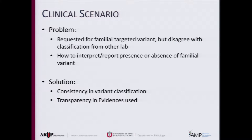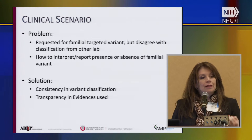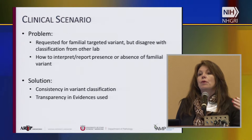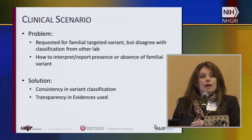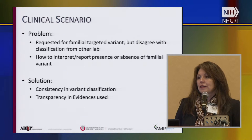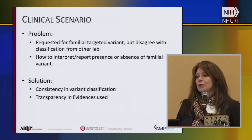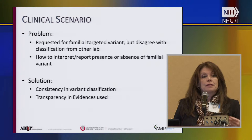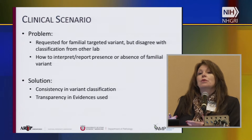One of the major problems I'm dealing with today is that we get requests to perform a targeted mutation or targeted familial variant test on an individual whose relative was tested in another laboratory. We're getting reports that this is a pathogenic variant, and now I'm supposed to test for this so-called pathogenic variant. When we look at the evidence, we don't agree with that classification. So how do I write a report — whether the individual I'm testing is positive or negative — essentially saying we don't think this is pathogenic, or we don't know yet if it is?